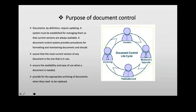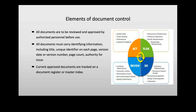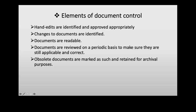All documents are to be reviewed and approved by authorized personnel before being put into use. All documents must carry a title, a unique identifier on each page, version number, page number, and who has authorized them for issue. Current approved documents are tracked on a document register or master index. Any hand edits made to a document should be identified and approved with a signature. Documents should be readable and reviewed on a periodic basis — yearly — to ensure they are still applicable and correct.